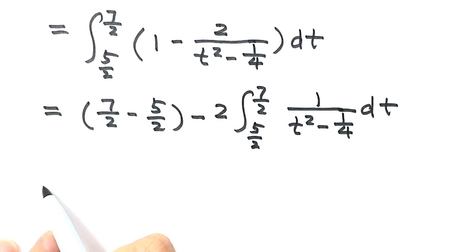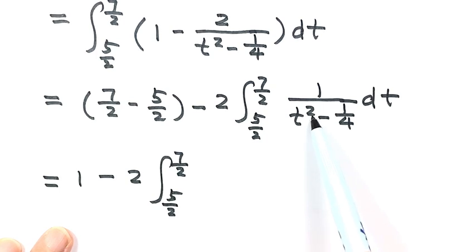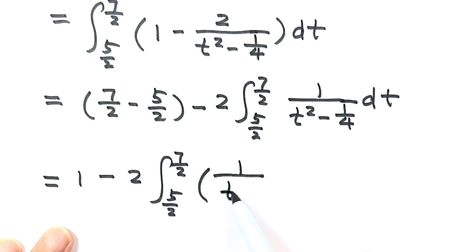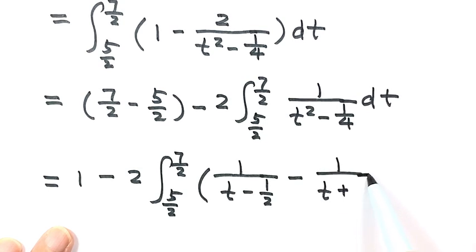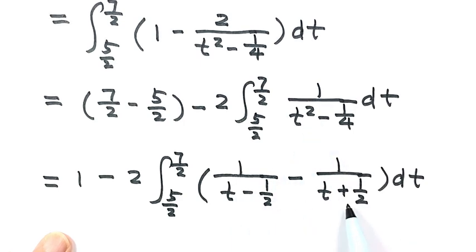The first integral simplifies to 1. For the second integral, we reduce the power by separating 1/(t² - 1/4) into partial fractions: it equals 1/(t - 1/2) minus 1/(t + 1/2), all over 1. We can verify this by taking the common denominator and combining — they are equivalent. Now the power is reduced from 2 to 1, making it easy to integrate.